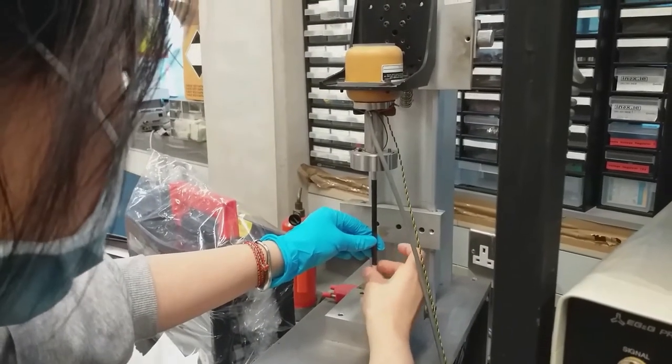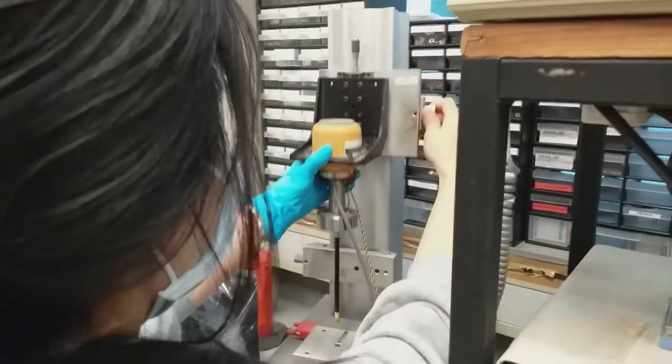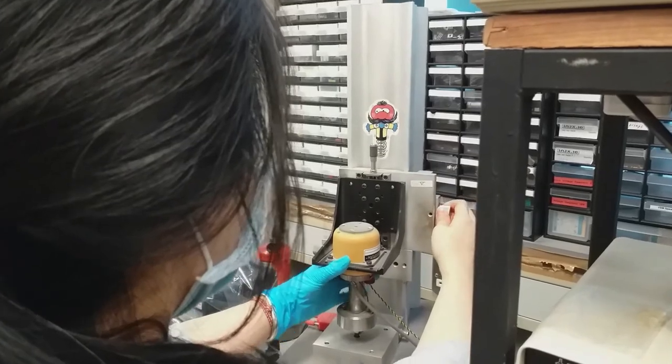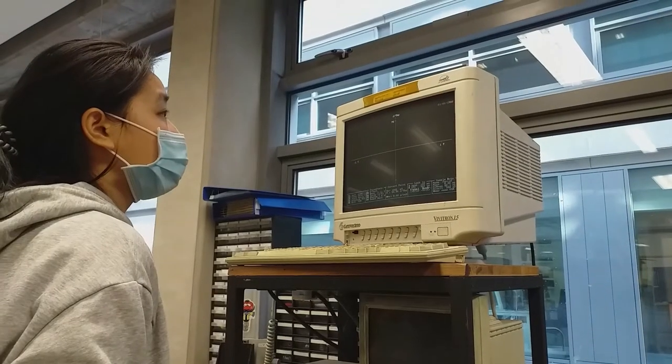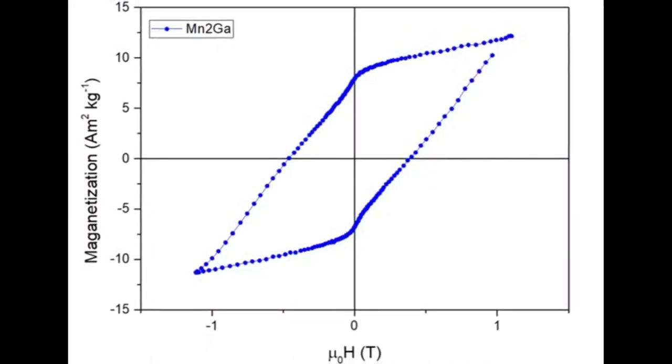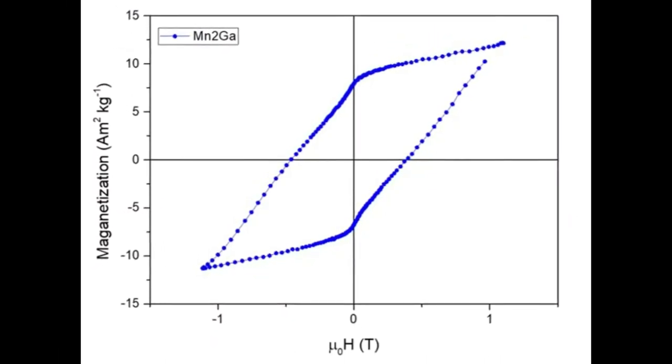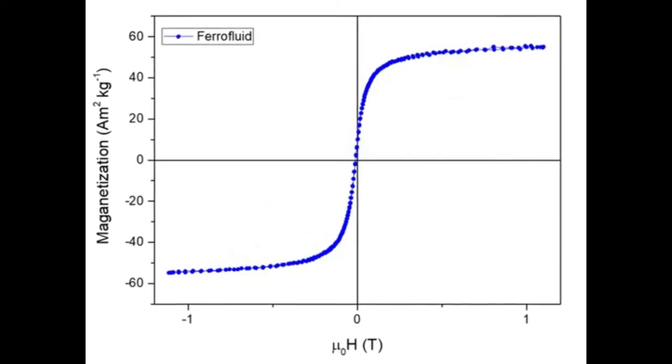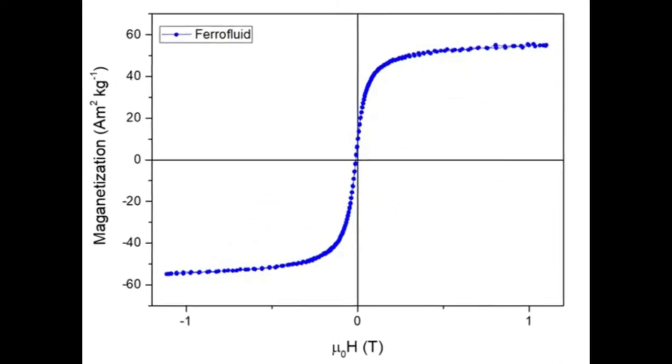After the calibration, now we can load the sample we have prepared, following the program guidelines to finish the M vs H scanning. Here, there are two types of loops we have measured. One is manganese-gallium which shows a high hysteresis loop. The other one is ferrofluid which shows just a small hysteresis.